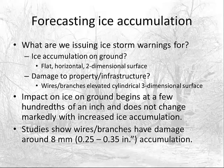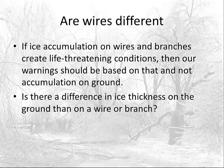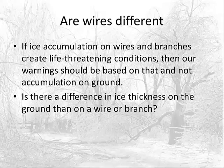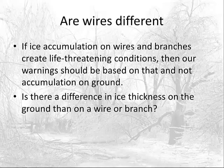So the question is: should we base our warnings on accumulation on the ground or on wires and branches? My opinion is that wires and branches coming down is what changes conditions from hazardous for driving to life-threatening. If you assume you're really looking at accumulations on wires and branches, then is there a difference in ice accumulation on a wire or branch versus the ground?